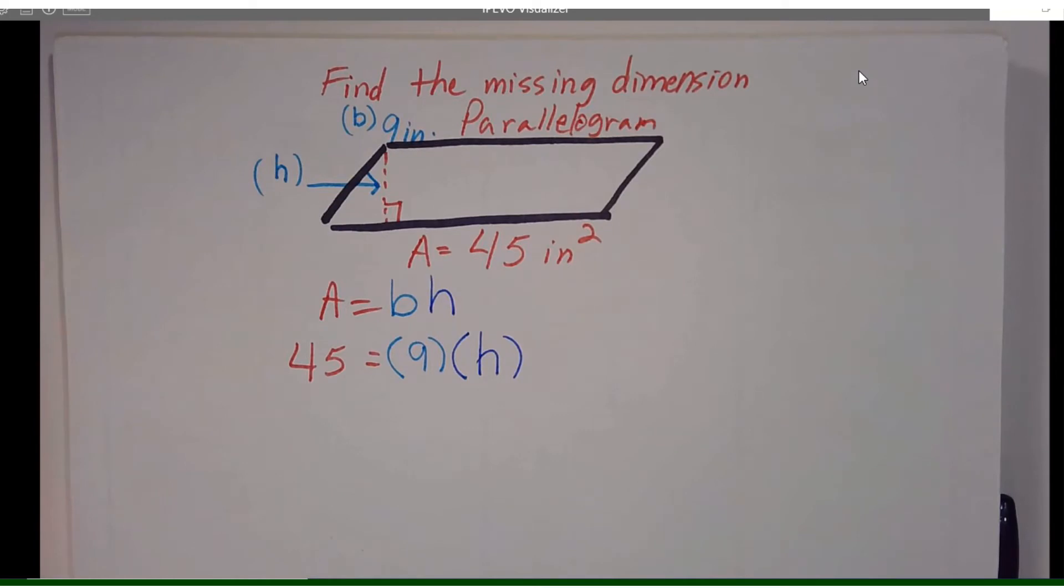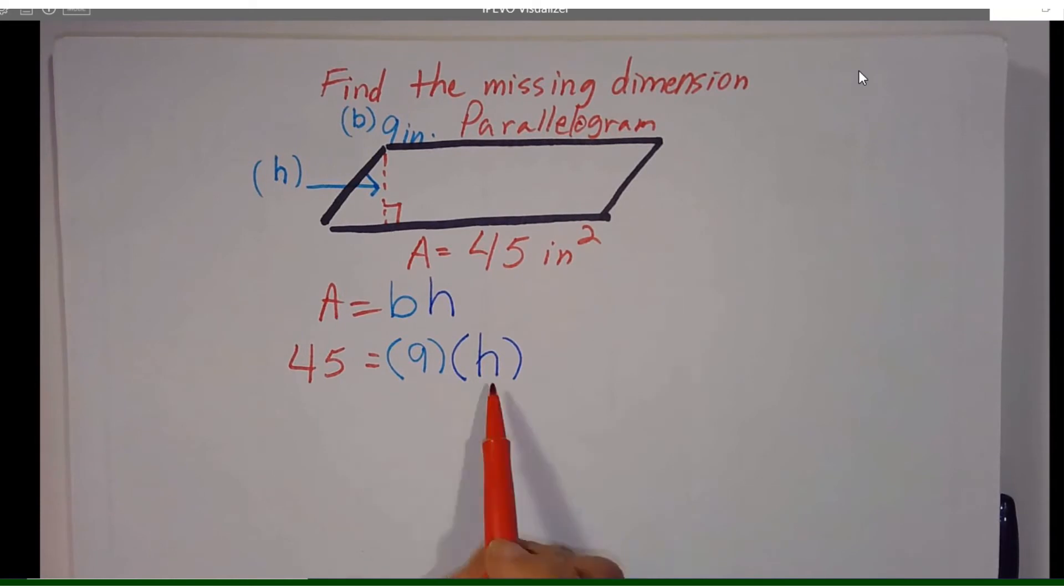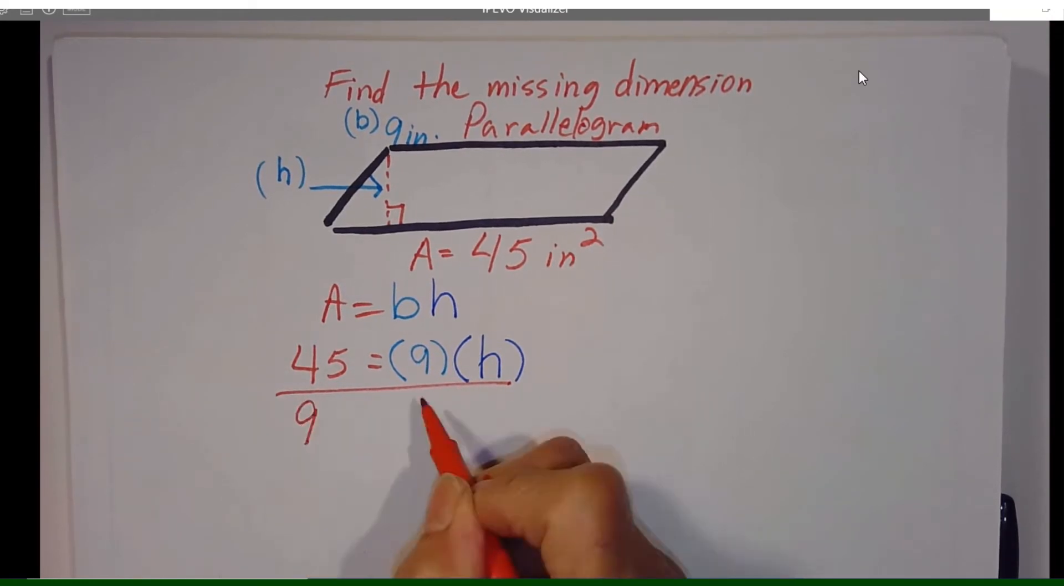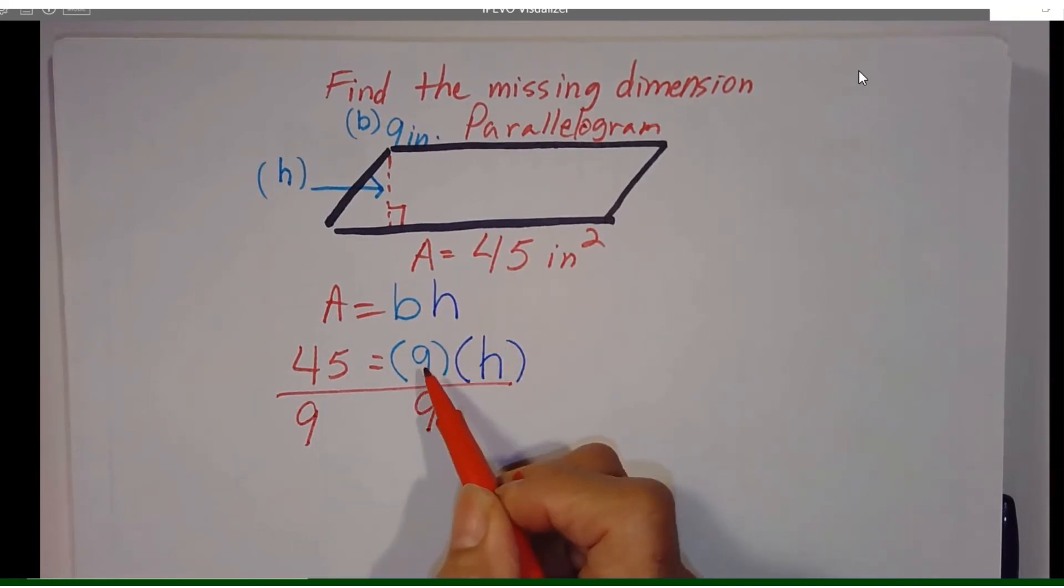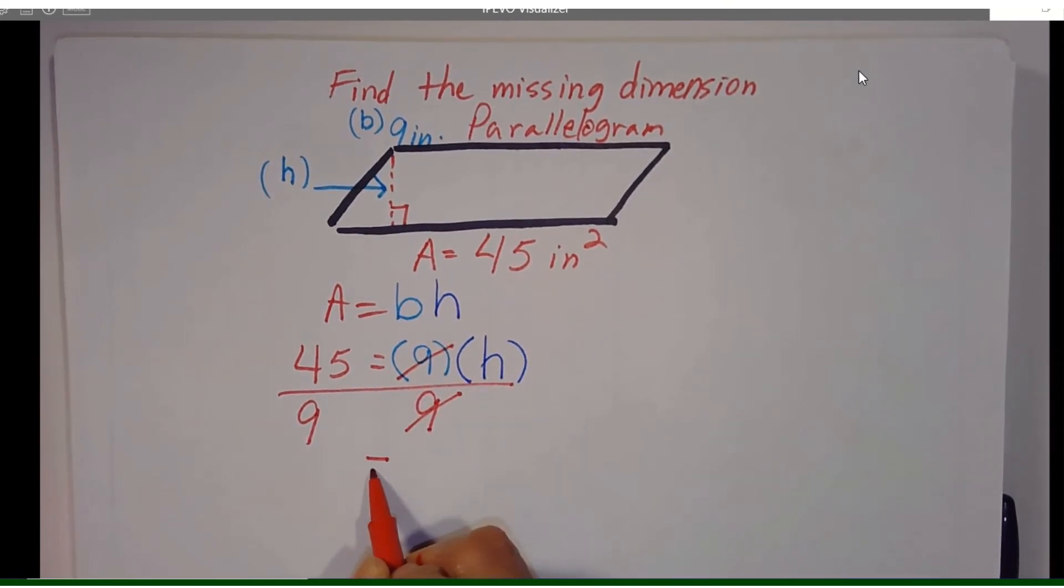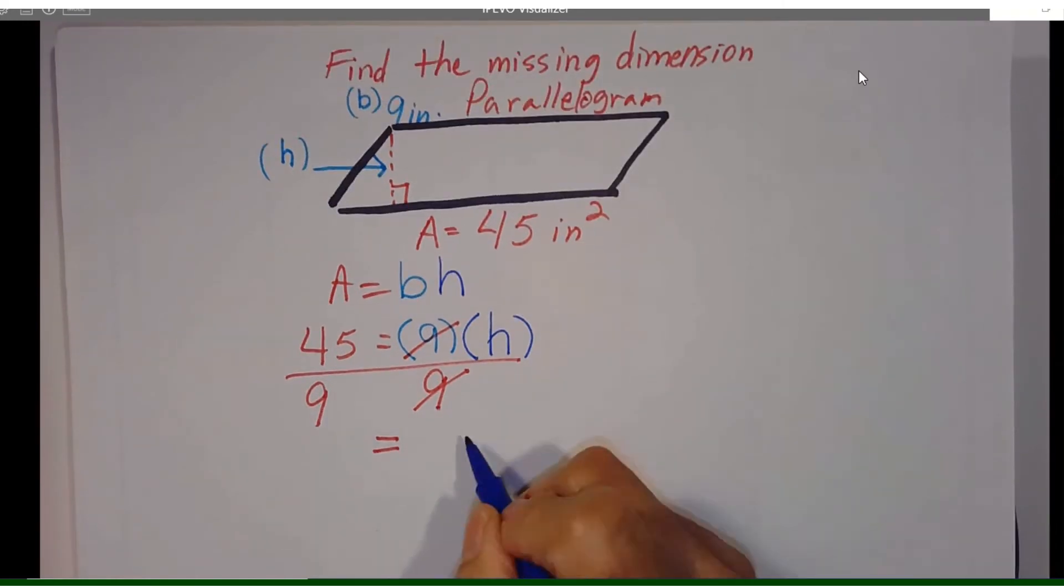Now, all we need to do is identify what our height is. So I'm going to divide each side by nine since I already know what my base is. As we know that nine goes into nine one time so that's going to cross cancel that. We're going to bring down this H to find out what our height is.